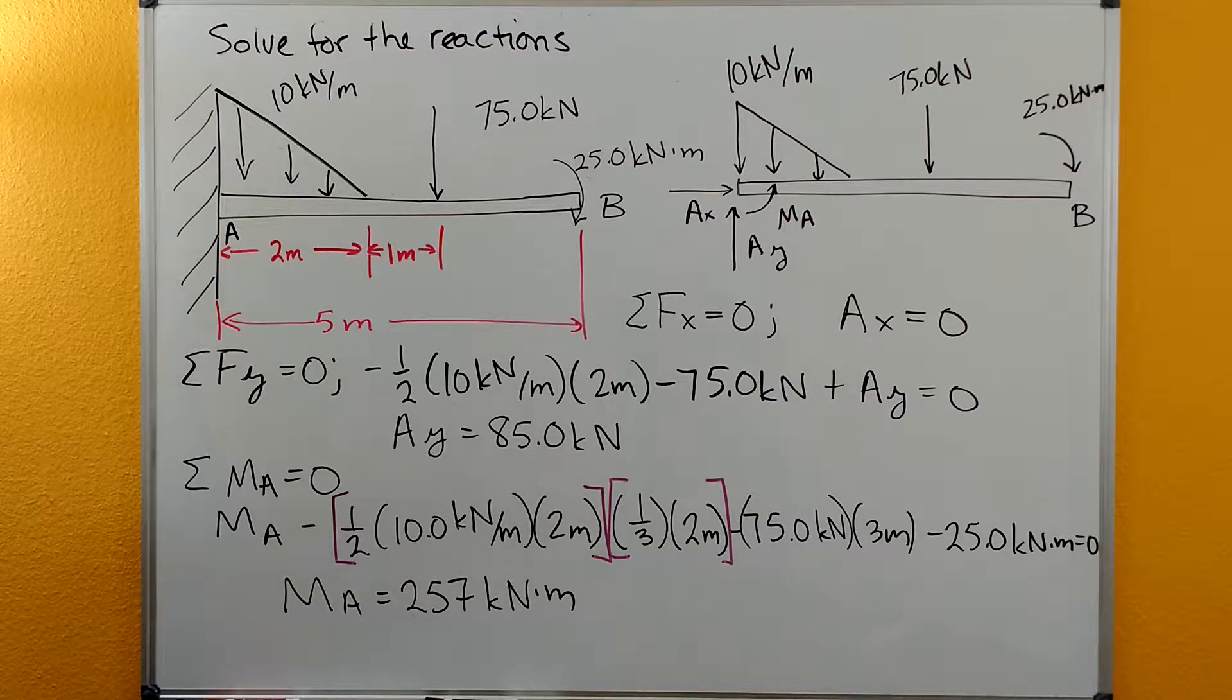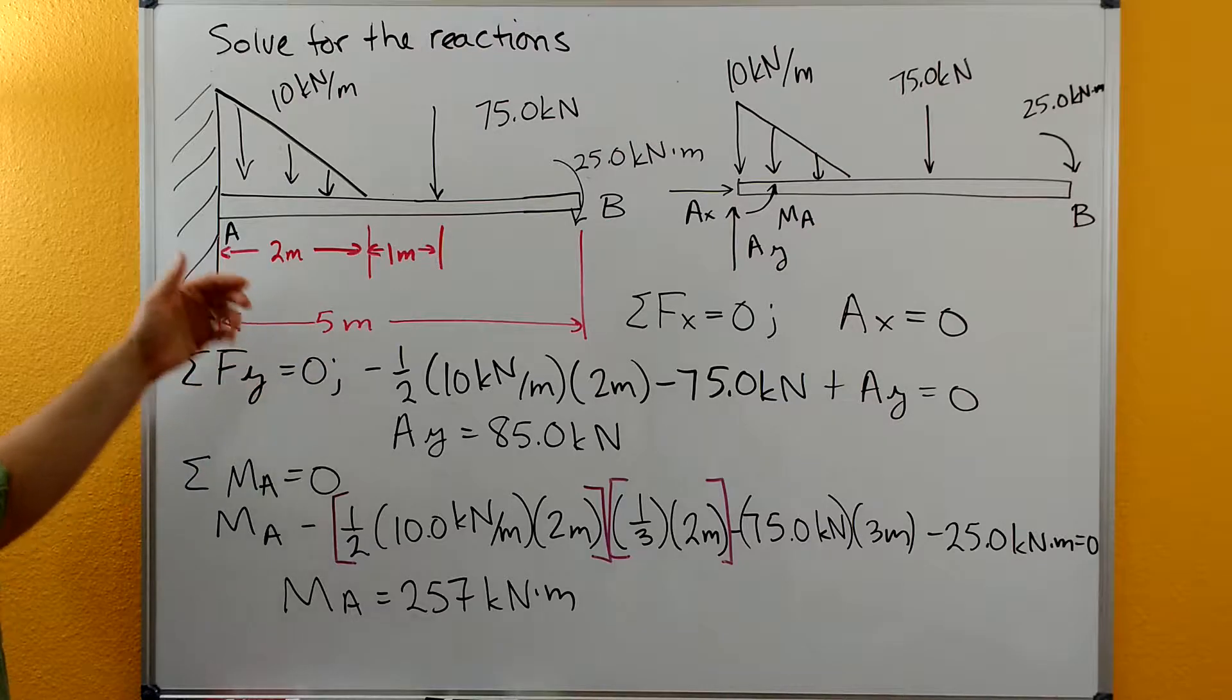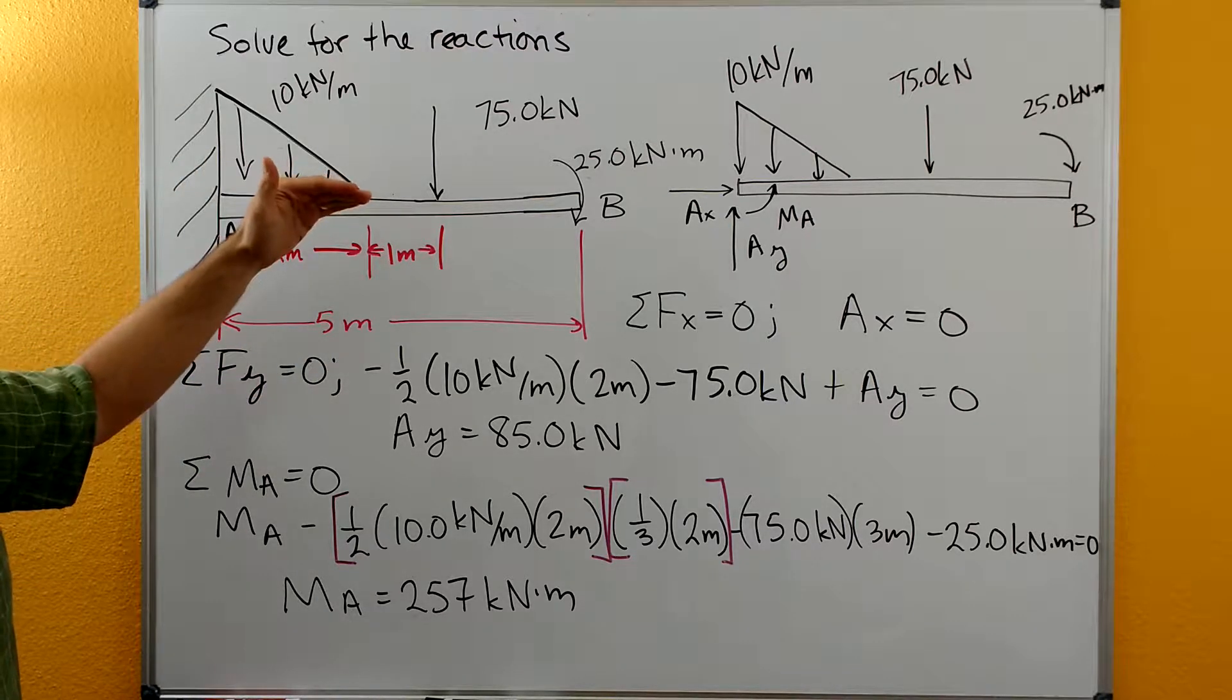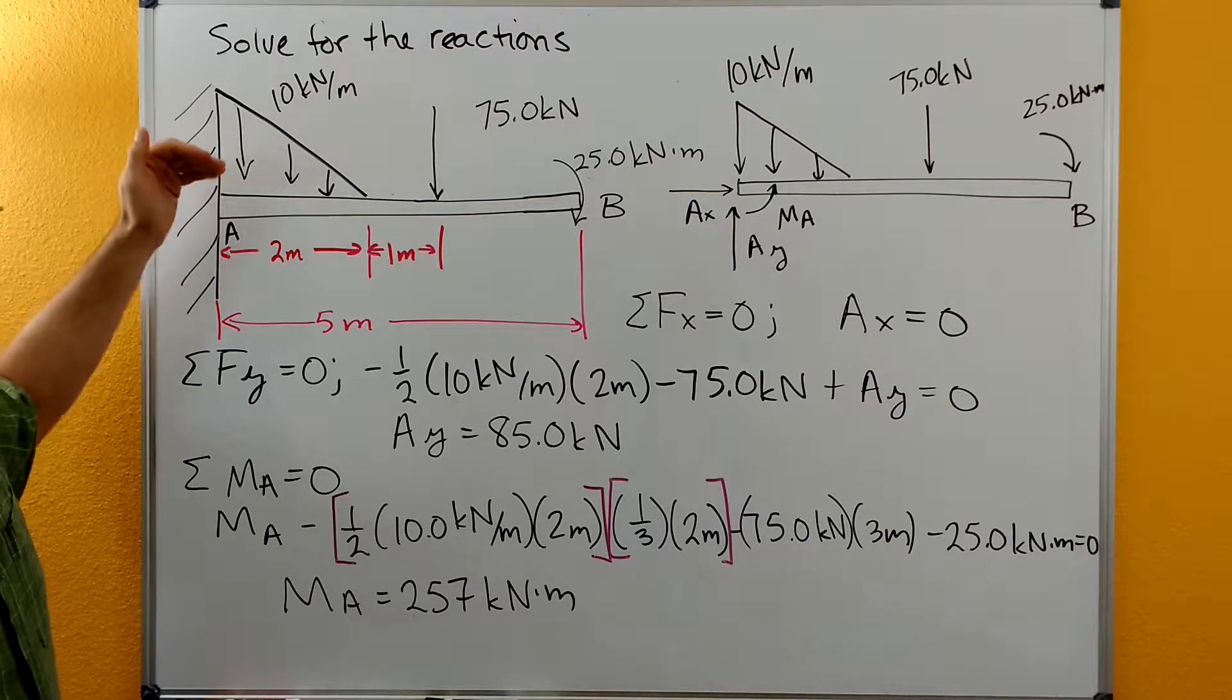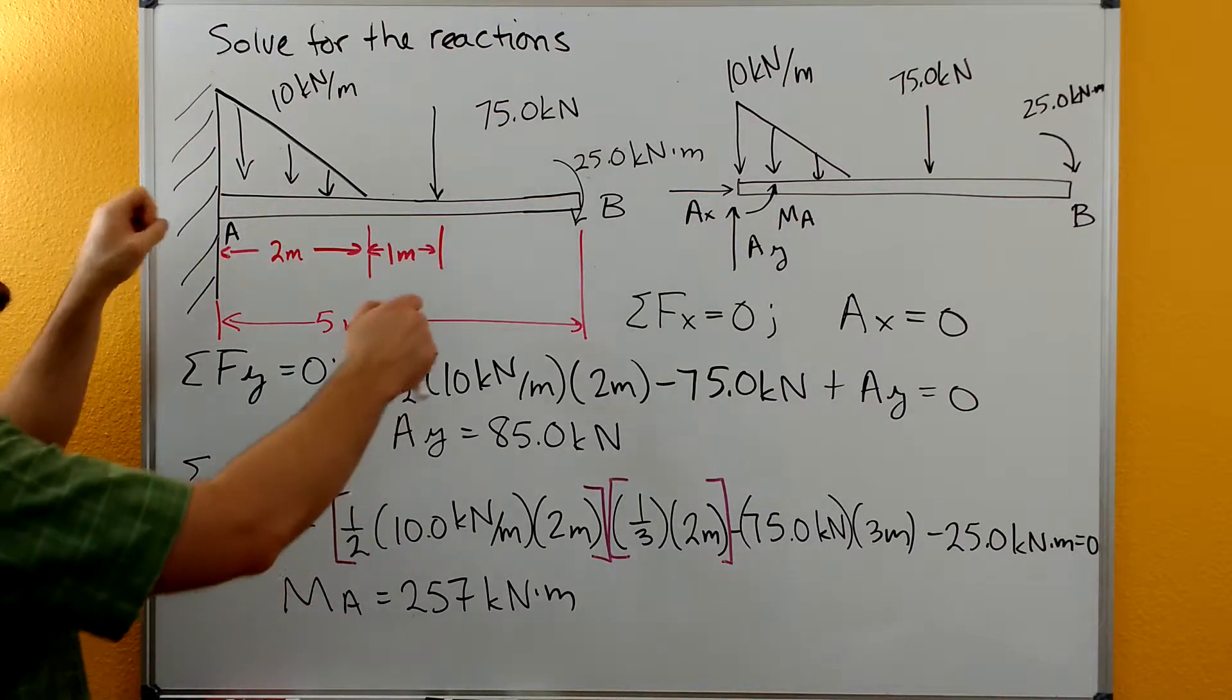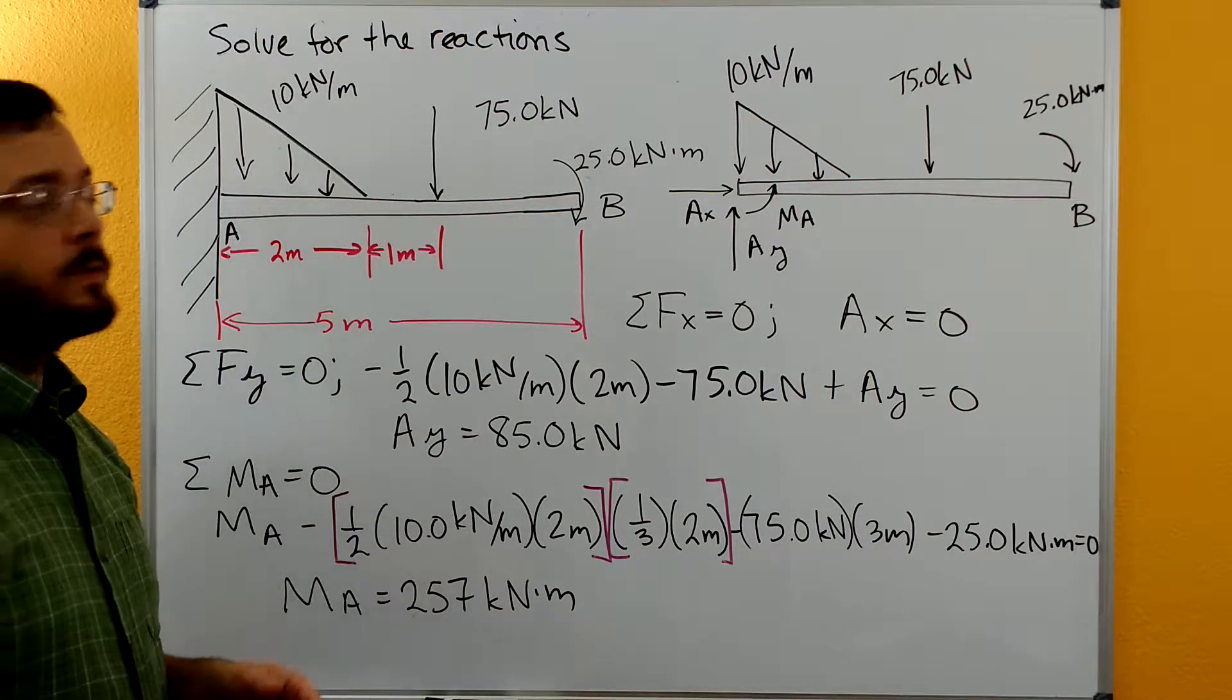So let's draw our free body diagram. Our fixed support means we cannot translate the beam in X because it's fixed to the wall. We cannot translate the beam in Y because it's fixed to the wall, and we also can't rotate the beam around point A because it's fixed to the wall.